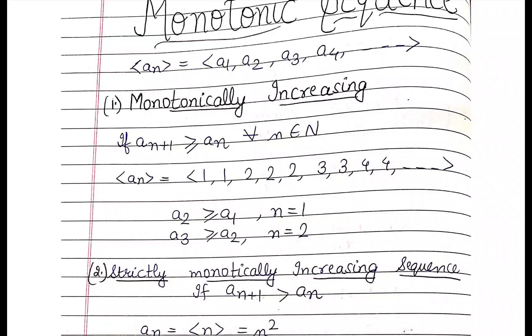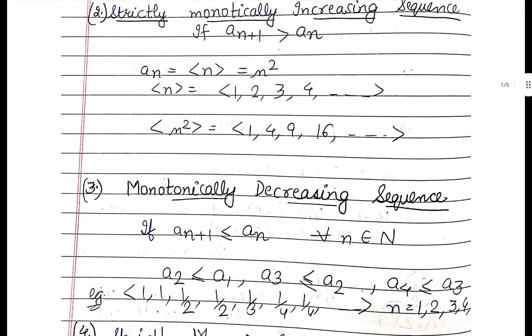Greater than or equal to — meaning consider a sequence like 1, 1, 2, 2, 3, 3, 4, 4. For this example, the term a_(n+1): as you can see, a2 is the second term. It is equal to or greater than the first term a1. From a2 to a3 it increases. So in this sequence, the next term is either equal to or greater than the current term — that is monotonically increasing.